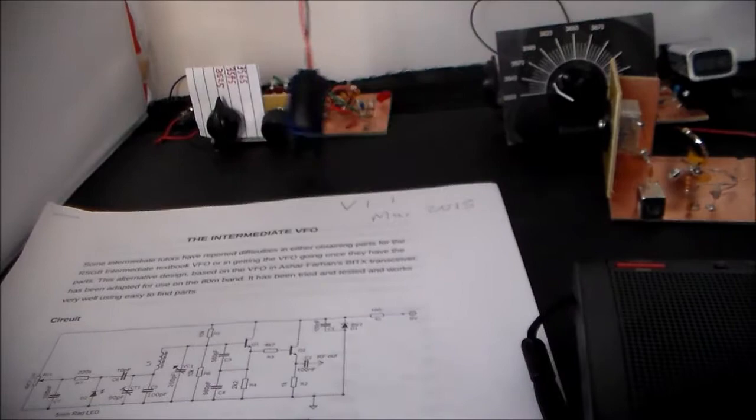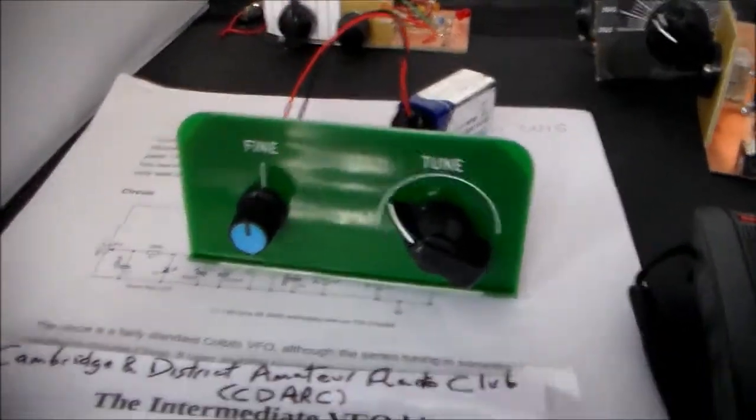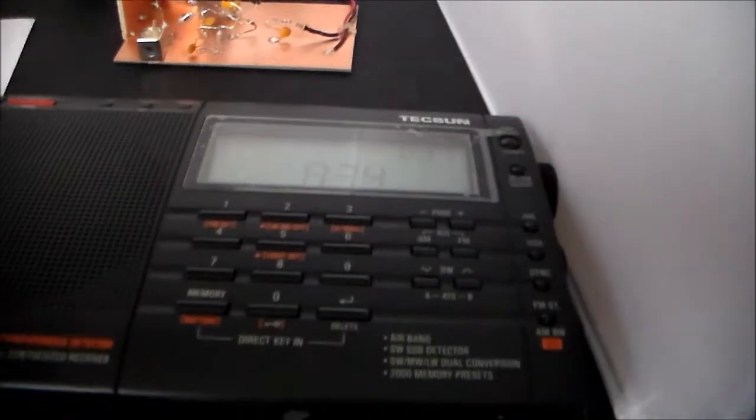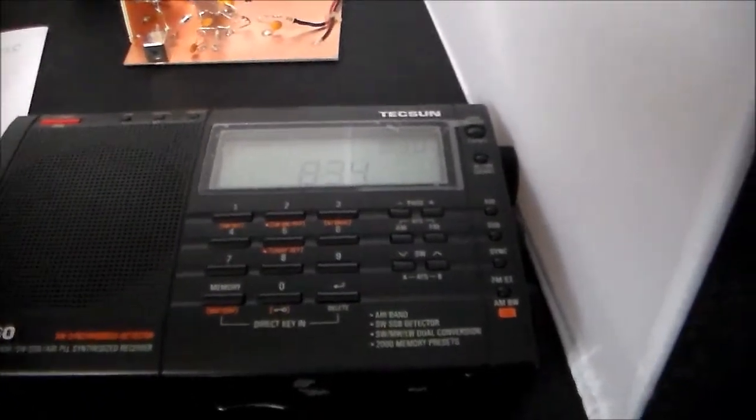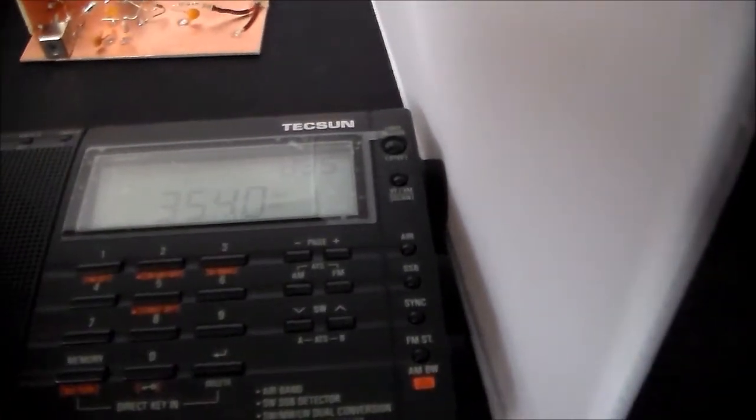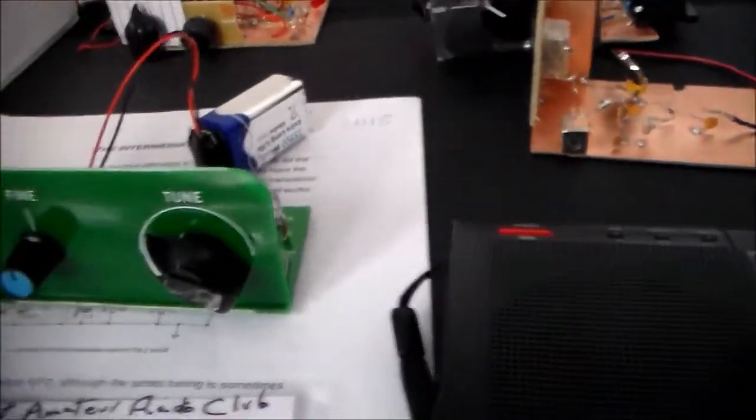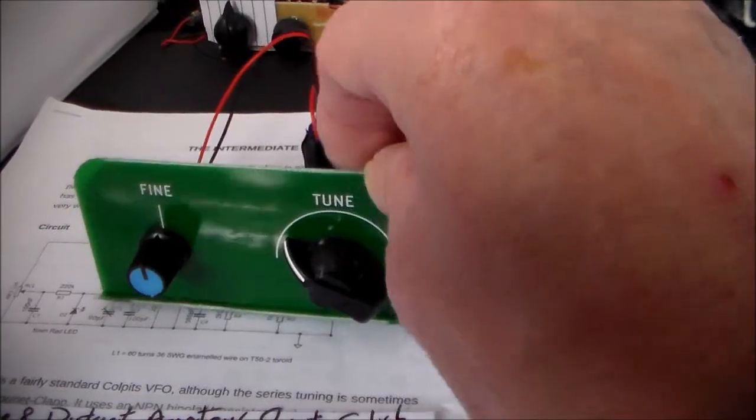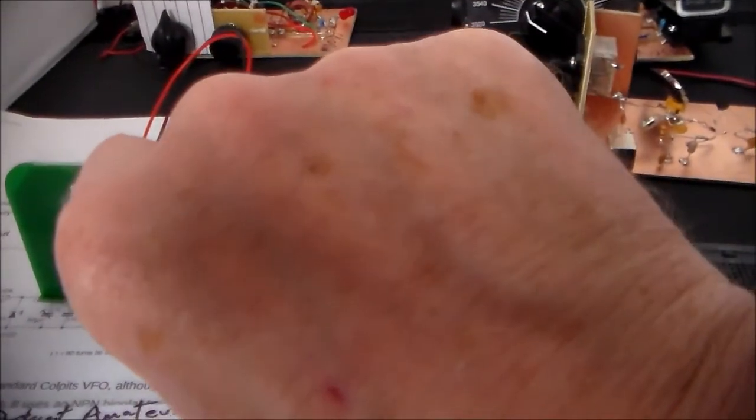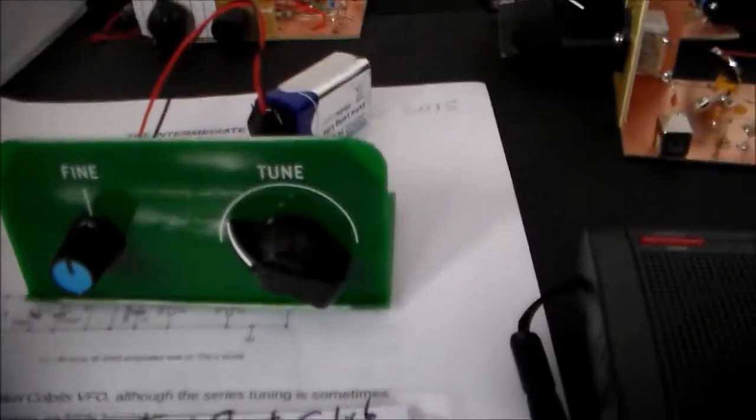Okay, we'll put that one back there. I'm going to switch it on in a second. Right, that's my little transistor radio. I'll switch that on. It's on 3540 in the 80 meter band. Tune this there. There you go, that's all working.